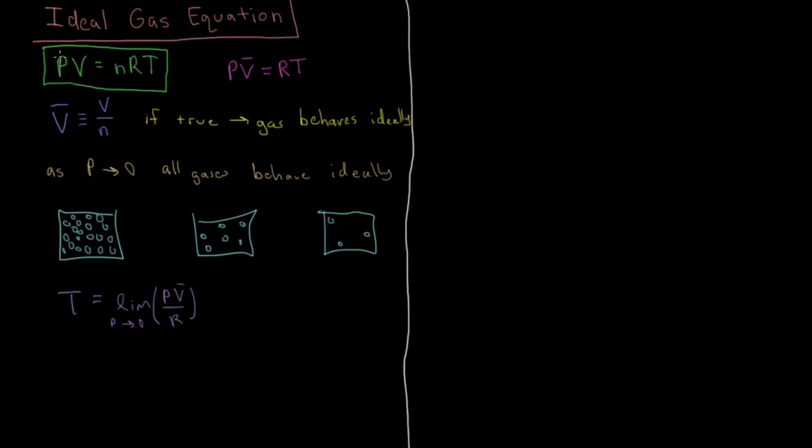So why is this true? Well if we take PV and we divide by nR we're going to get PV̄ over R and then we'll just have T left by itself. So if a gas is behaving ideally then the temperature will equal the pressure times the molar volume divided by the gas constant. In the limit that pressure goes to zero all gases behave ideally, so therefore in the limit of low pressure our temperature is going to be this pressure times molar volume divided by the gas constant.